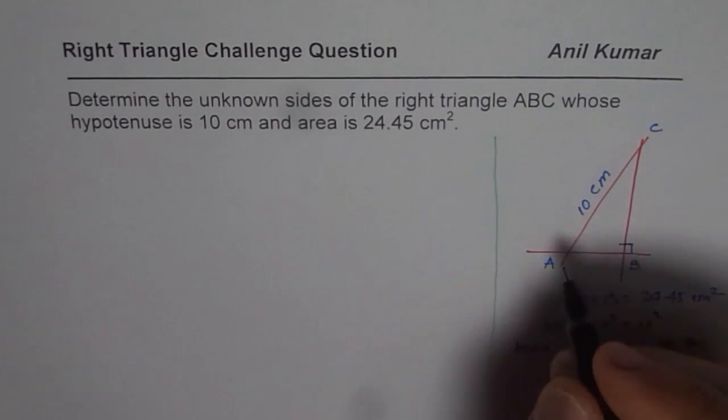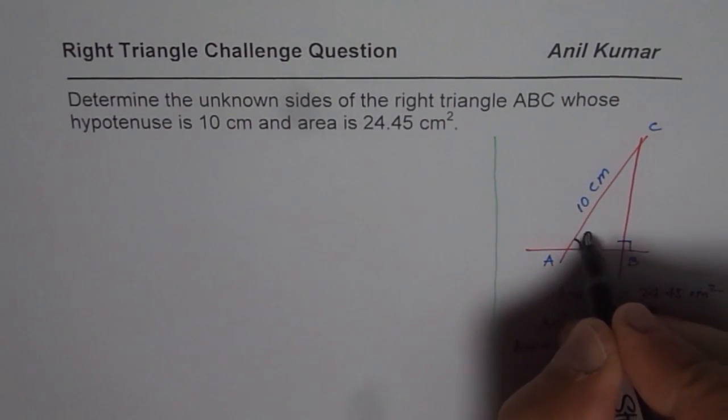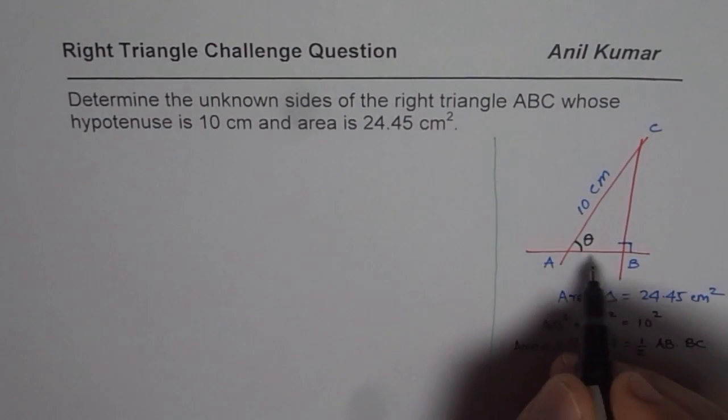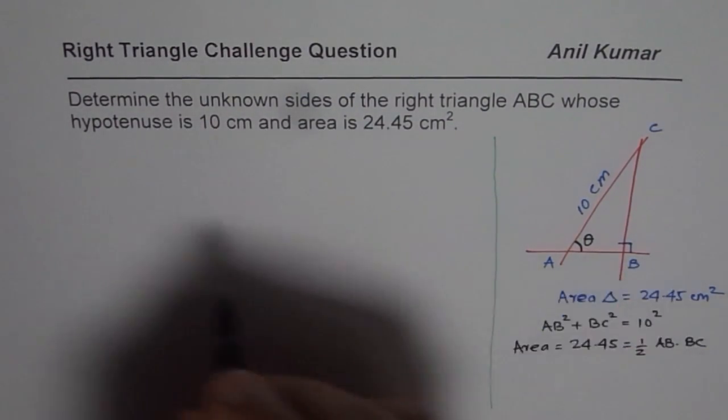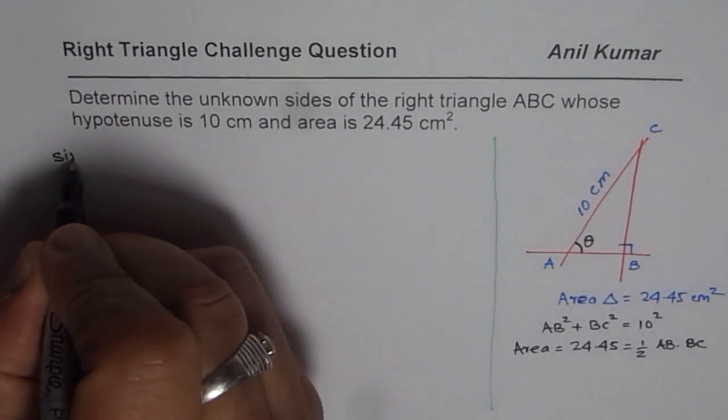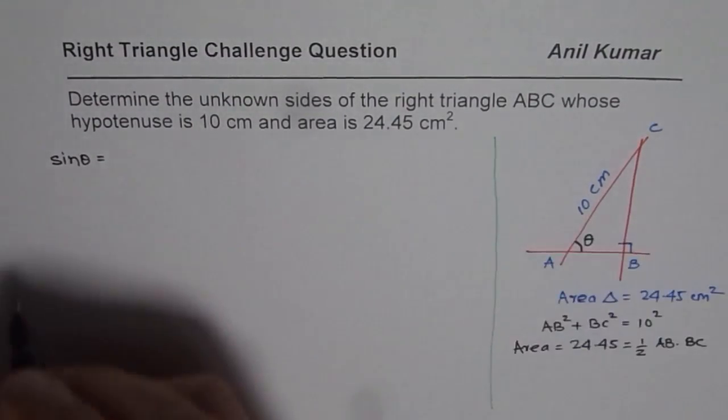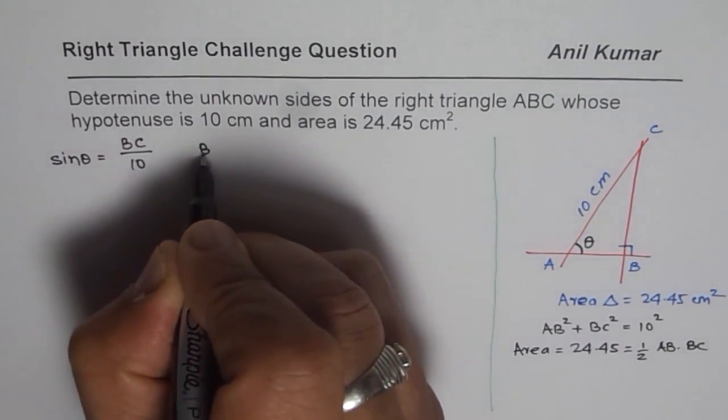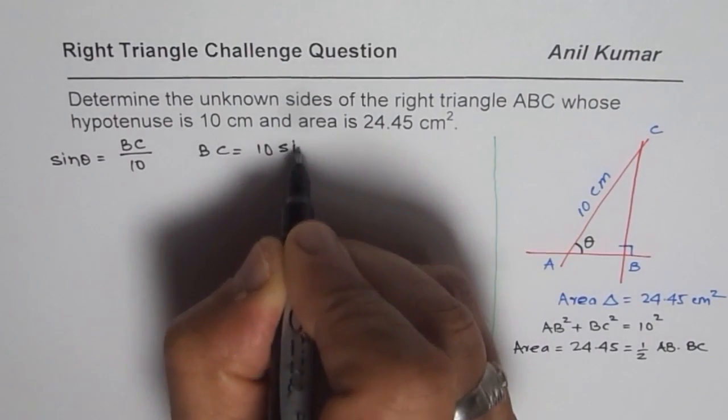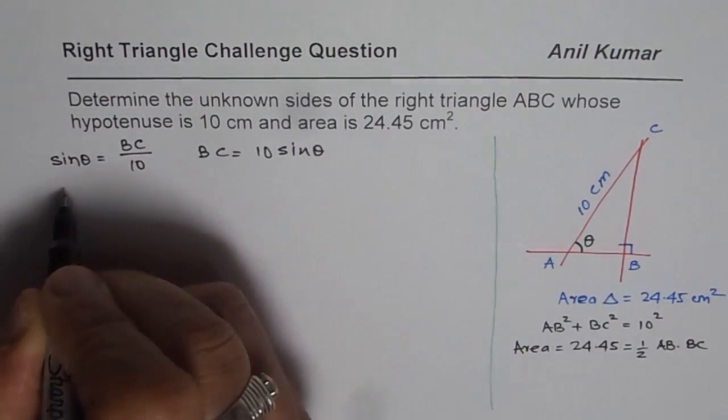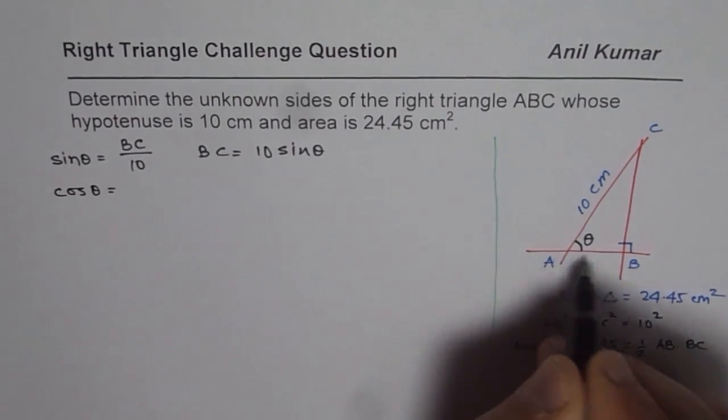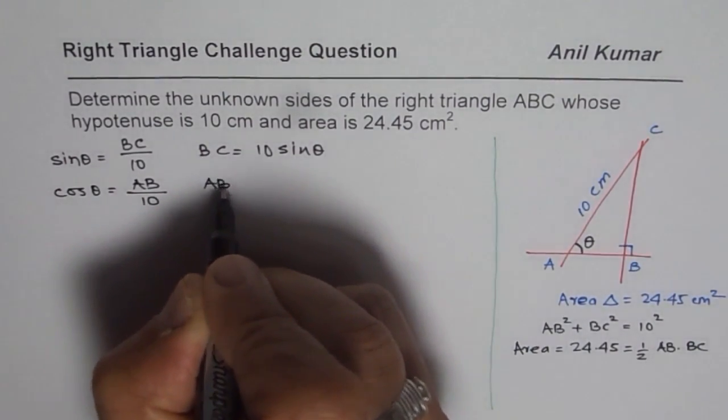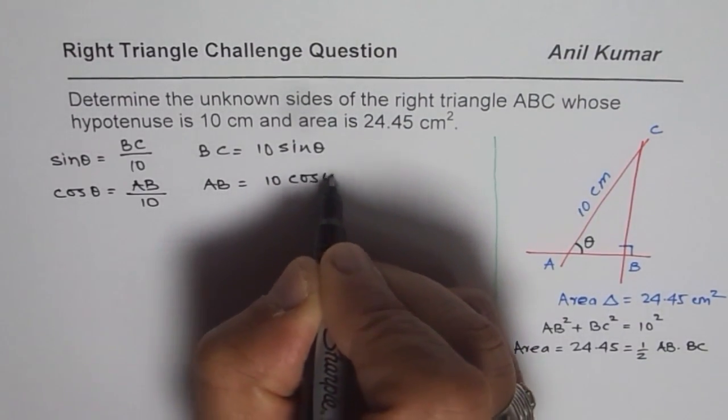So what we will do here is, we will assume that this angle is theta for us, right? Now, if this angle is theta, in that case, we can say, we will use trigonometry here. So we can say, sin theta is equals to the opposite side over hypotenuse. So let's say, BC over 10. And that gives us, BC is equals to 10 sin theta, right? Similarly, we can say, cos theta is equals to AB over 10. And therefore, the side AB is equals to 10 cosine of theta, correct?